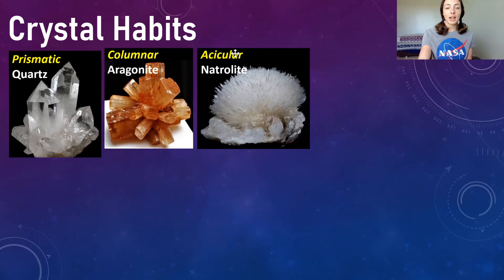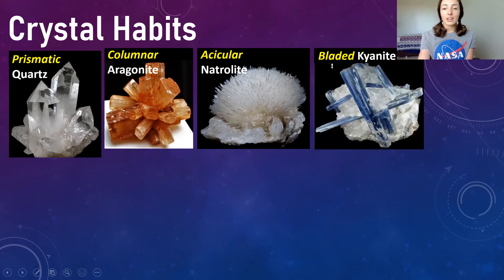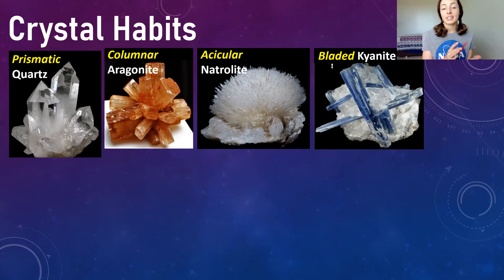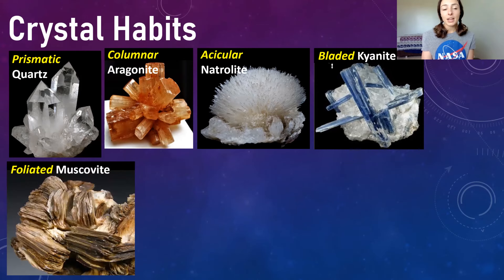Then we have acicular or needle-like crystal habits, shown here by natrolite. Then we have bladed crystal habits, where you have a thin blade-like habit of a crystal, and in this case this is an example of kyanite.